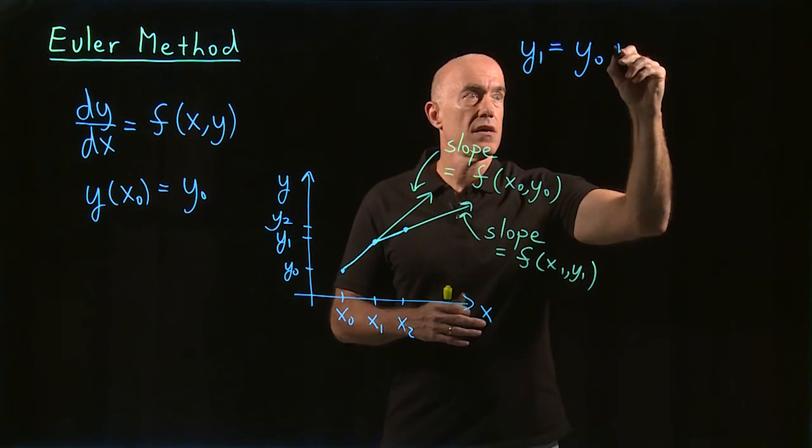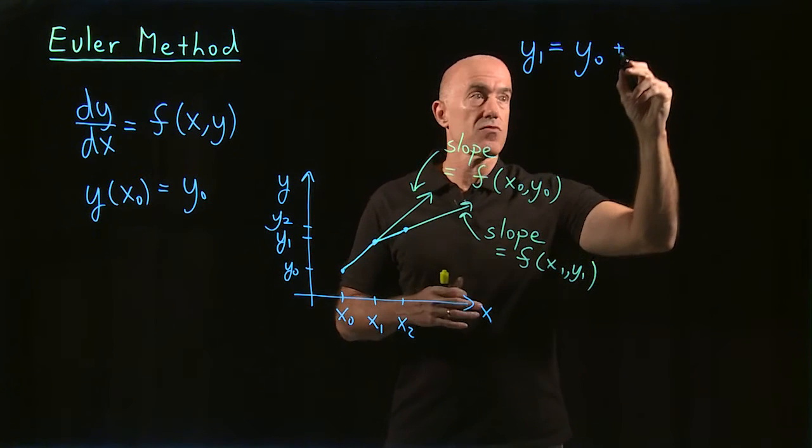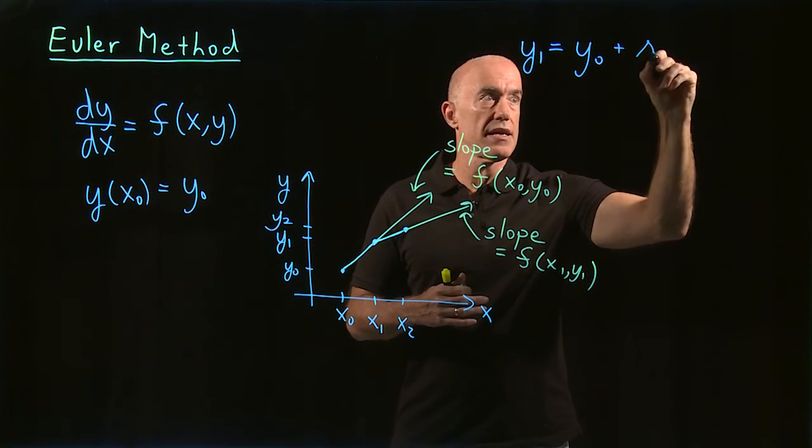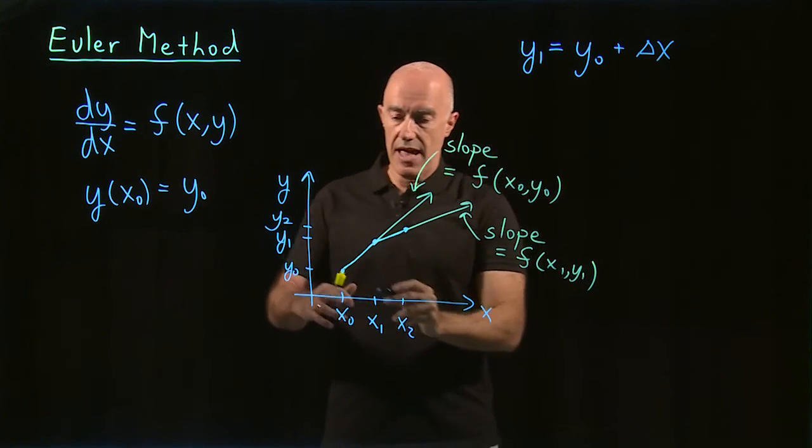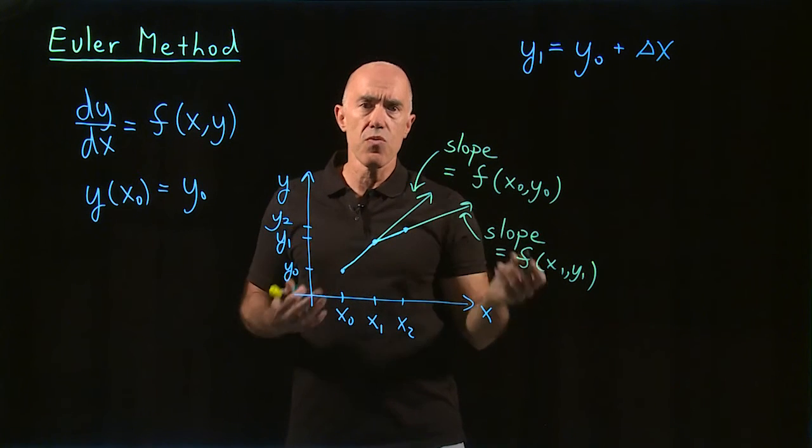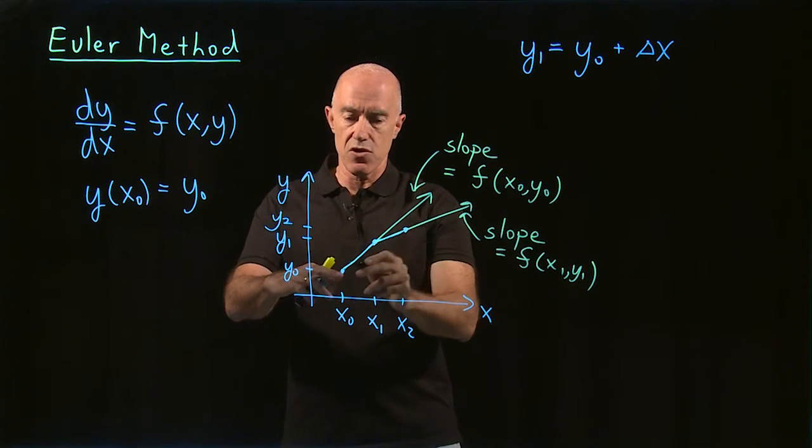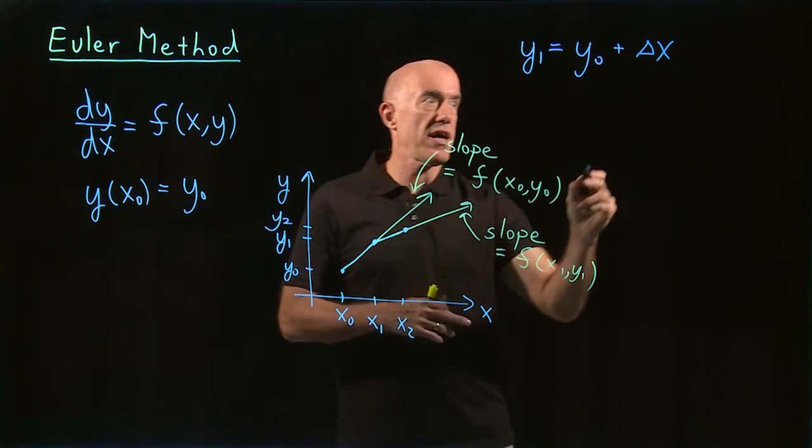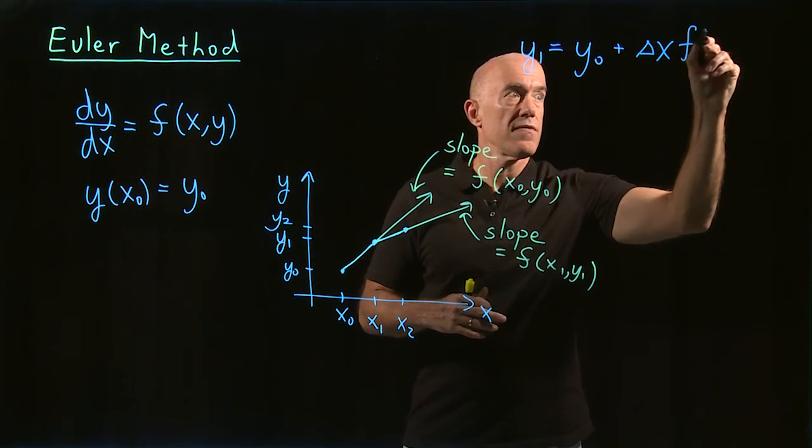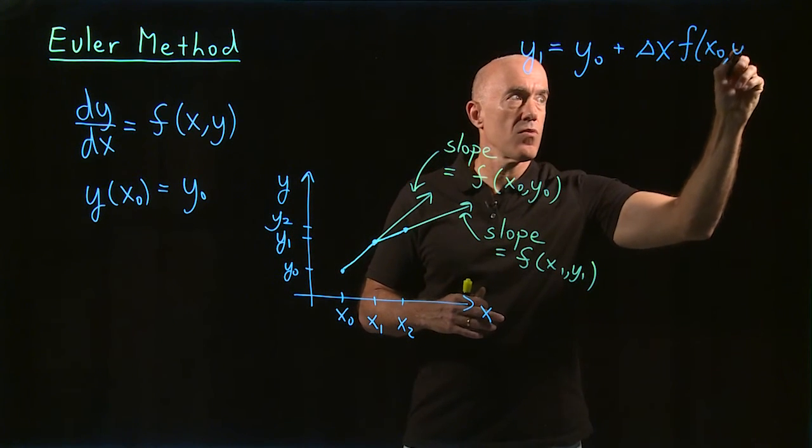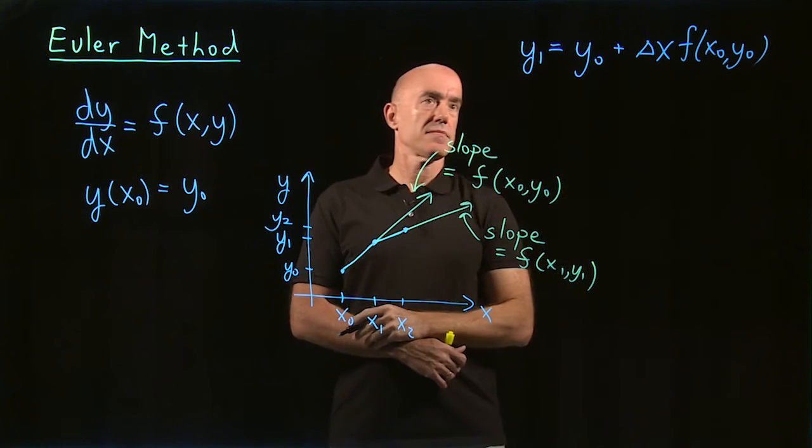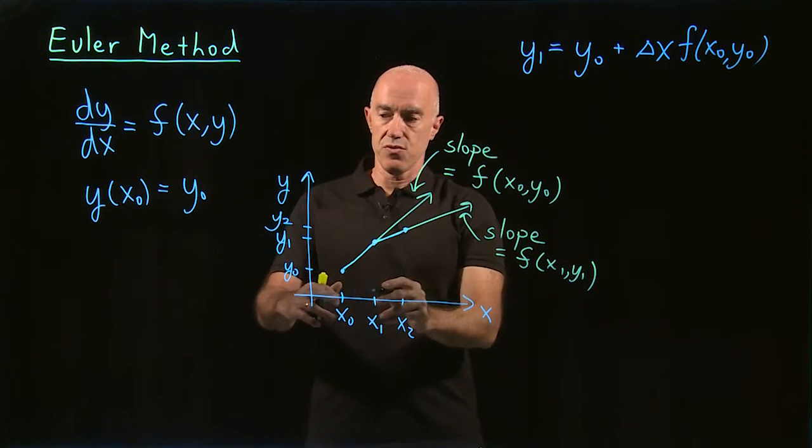So delta x, I can write as, just let me write it as delta x. And then delta y over delta x is the slope here. And that's just our f of x naught, y naught. That's to get to y1.